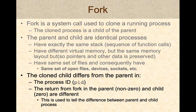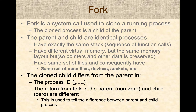The only difference between the child process and the parent process is the return value from fork. In the parent, it's a non-zero return value from fork. In the child, fork will return zero. And this return value difference is typically used in parent and child to perform different logic, depending on what type of program is being developed.